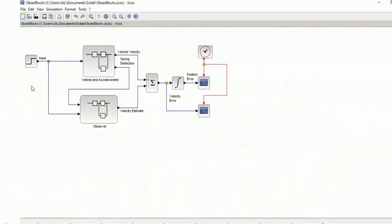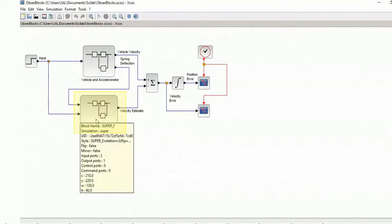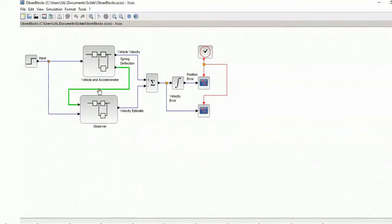For the last simulation, we are going to estimate the vehicle velocity using a Luenberger observer. We have our plant, vehicle plus accelerometer, and our observer as two separated subsystems. The spring deflection measurement is an input to the observer. The external force is the other input to the observer.